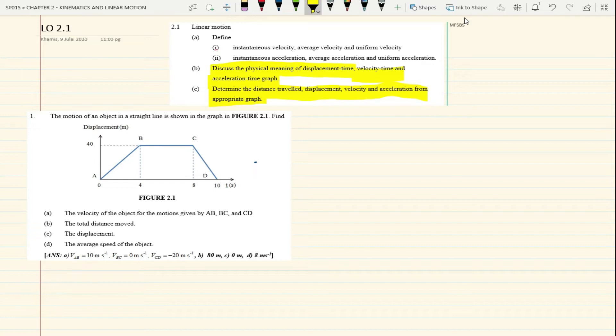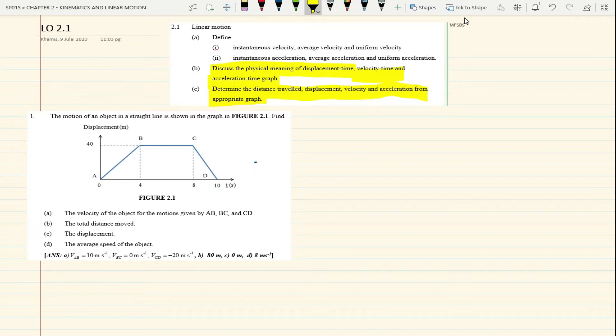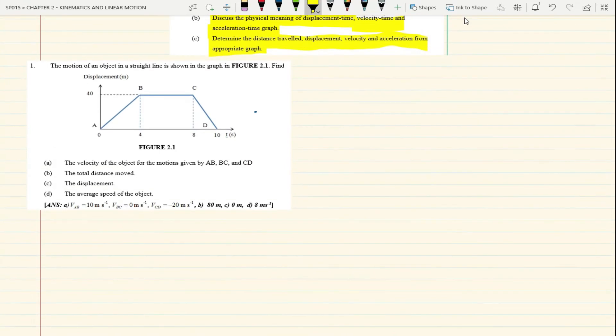So we start with tutorial question number 1. Over here we are given a displacement against time graph. In this question, the motion of an object in a straight line is shown in the graph in figure 2.1. So we are going to find first the velocity of the object for the motion given by AB, BC, and CD.